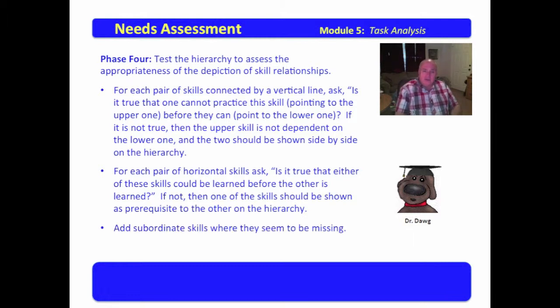For each pair of horizontal skills, is it true that either of these skills could be learned before the other is learned? If not, then one of the skills should be sewn as a prerequisite to the other on the hierarchy. Add subordinate skills where they seem to be missing. So once you get this map drawn out, skills in order, and those things that are equivalent, you want to sit down and you want to review it and say, well, did I miss something? Is everything in place? In order, in other words, have I thoroughly done a task analysis?